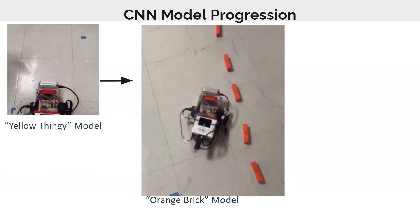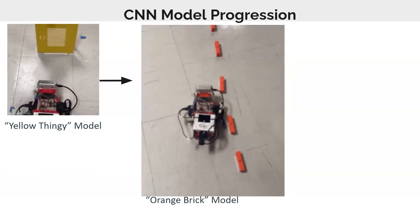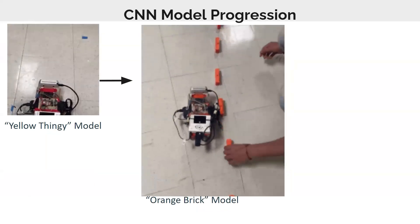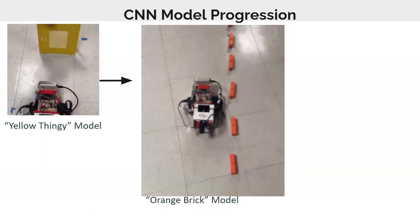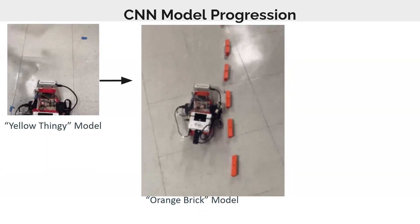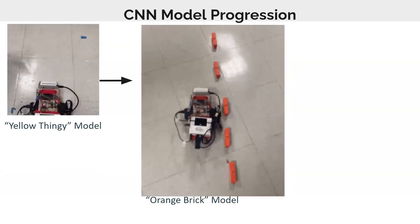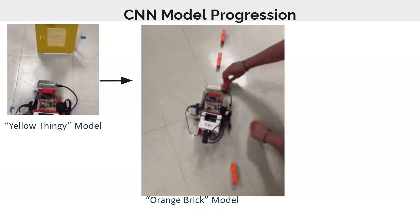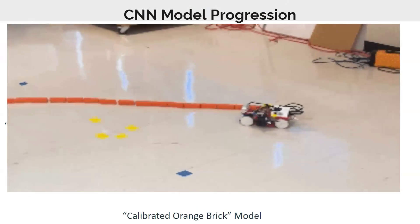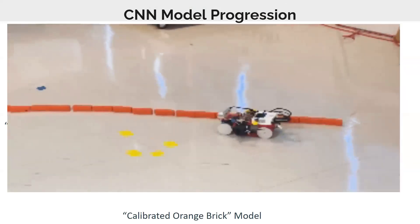And moving on to our next model. So after that, we added a constant speed to it to basically avoid these orange bricks. However, as you can see, it's not doing too well. This is because of the calibration for the turning, as well as the dimensions of the images. So after we fixed that, we actually had a working orange brick model.